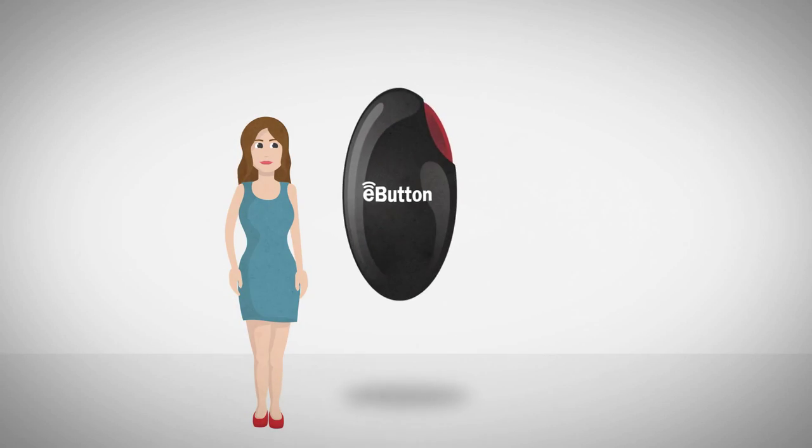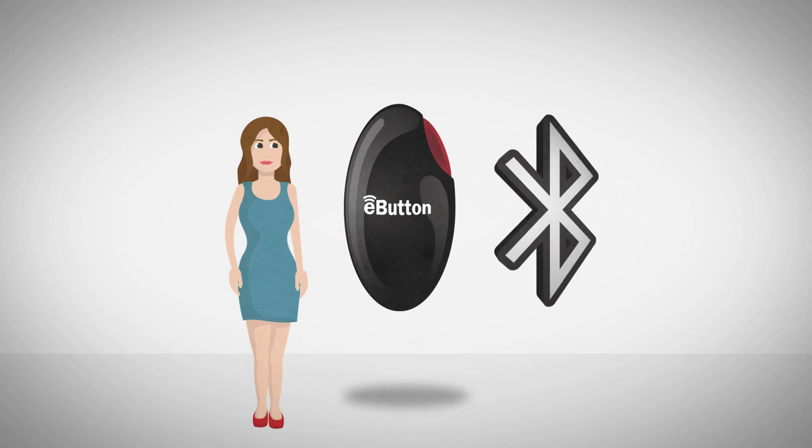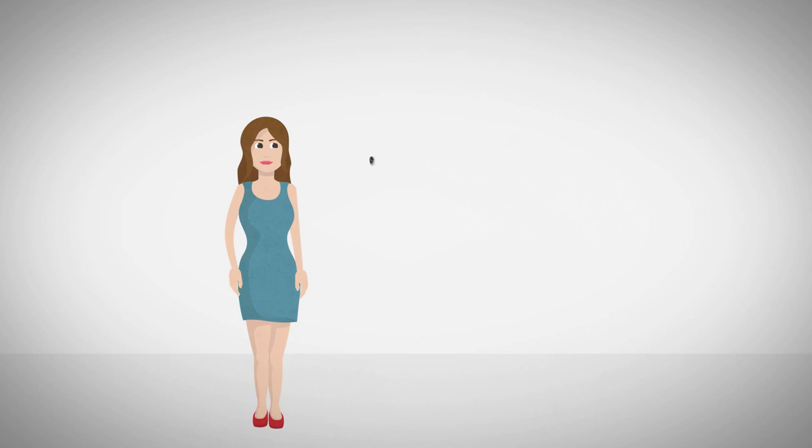E-Button is a world first low energy Bluetooth device. It's easy to use and travels with you, giving you peace of mind wherever you go.